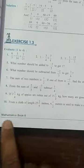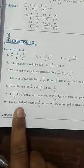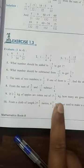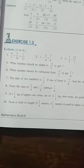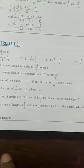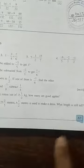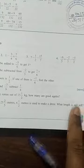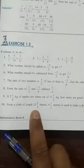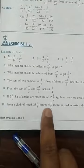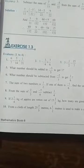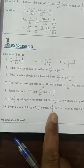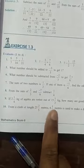We have to write the statements also. Next, from a cloth of length 25 and 2 upon 5 meter, 6 and 1 upon 2 meters is used to make a dress. What length is still left? You know that in the case of left, you have to subtract. So again, there is the total length of cloth, out of this 6 and 1 upon 2 meters has been used, okay. So 25 and 2 upon 5 minus 6 and 1 upon 2. You will do this, okay.